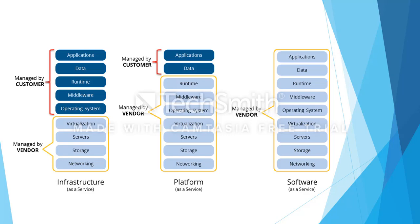In Platform as a Service, the vendor's responsibility increases and the customer's decreases. The vendor manages networking, storage, servers, virtualization, operating system, middleware, and runtime. The customer only manages the application and the data on that server. In Software as a Service, all components — networking, storage, server, virtualization, operating system, through to application and data — are managed entirely by the vendor.